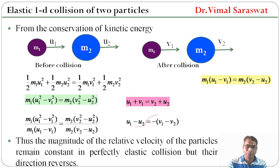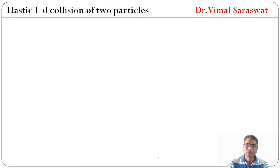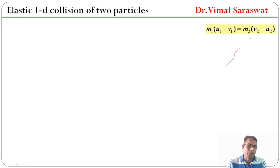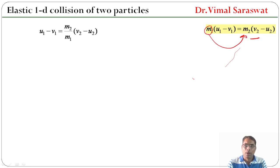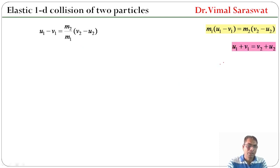Thus, the magnitude of the relative velocity of the particles remains constant in perfectly elastic collision, but their direction reverses. We have M1(U1 − V1) = M2(V2 − U2), which gives M2/M1 = (V2 − U2), and also U1 + V1 = V2 + U2.